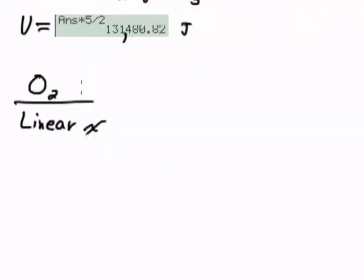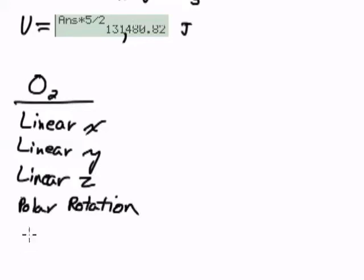Basically, for the O₂, you've got the linear x direction, the linear y direction, and the linear z direction. Those are 3 of the degrees of freedom. And then you've got the polar rotation, and what I think is called precession.